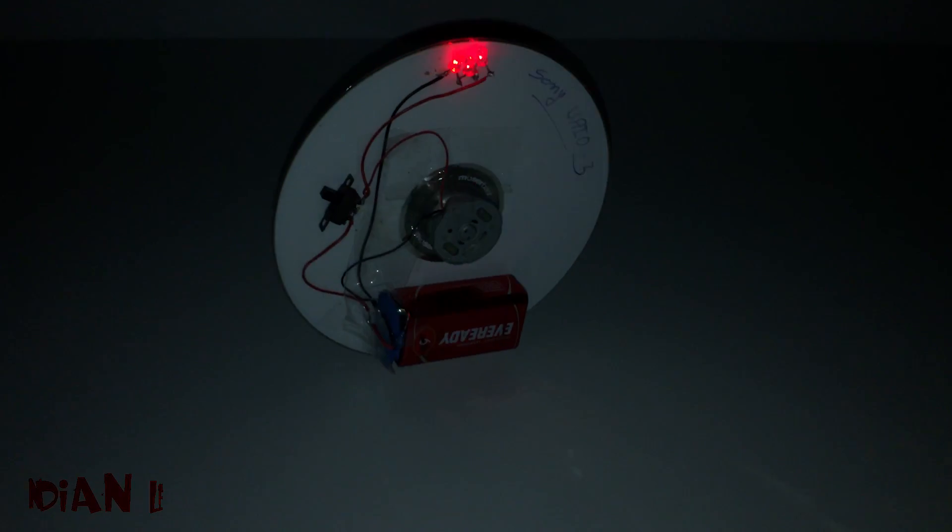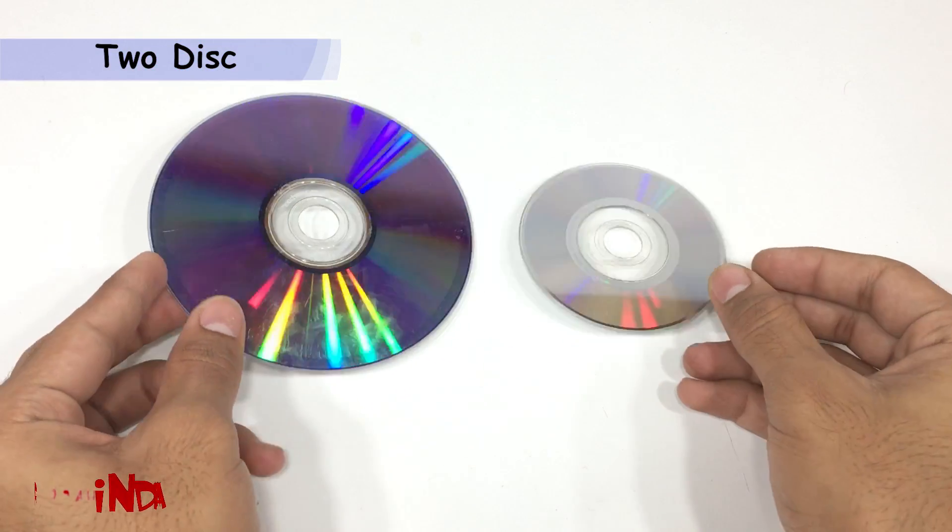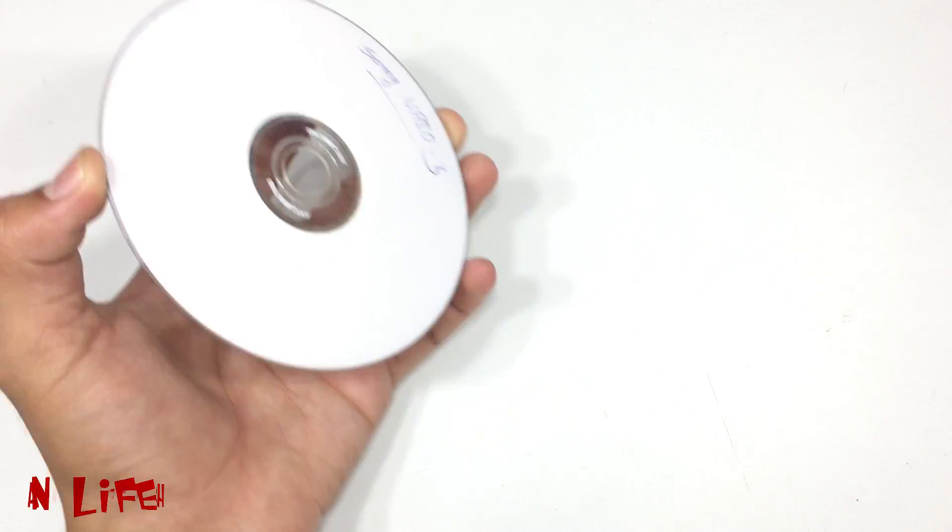Hi, this is Indian Lifehacker and today we are going to make an anti-gravity wheel. For making this we need two CDs, one of a normal size and another one of a small size.